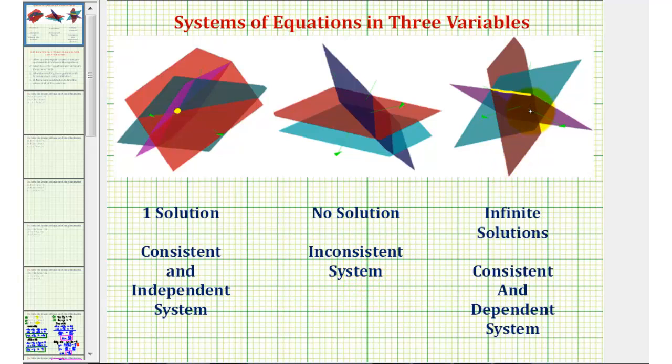And the third possibility is there's an infinite number of points on all three planes. Notice these three planes intersect in a line. We know a line contains an infinite number of points, therefore it's possible that a system has infinite solutions, meaning the system is consistent and dependent.